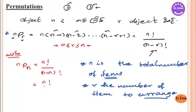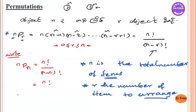nPn equals n factorial divided by n minus n, which is 0. Zero factorial equals 1. So nPn equals n factorial. Also, nP0 equals n factorial divided by n factorial, which equals 1.